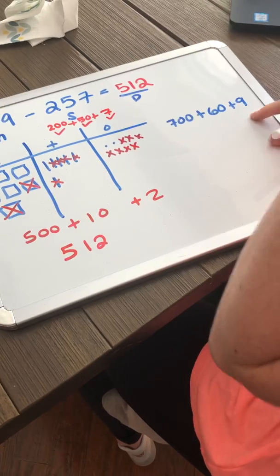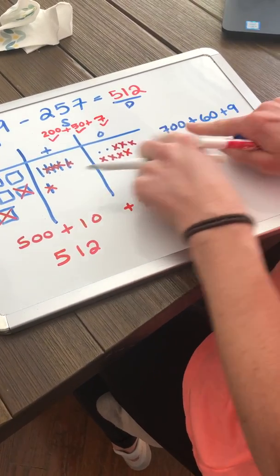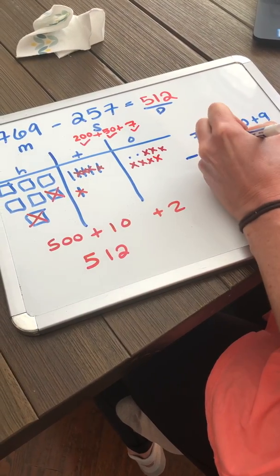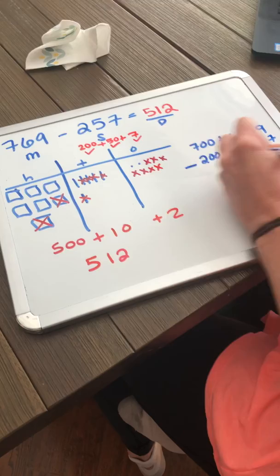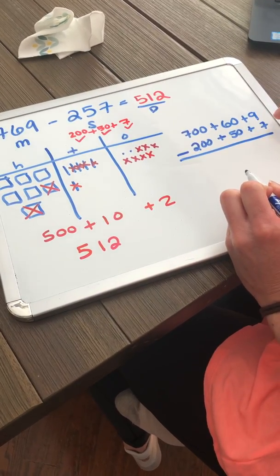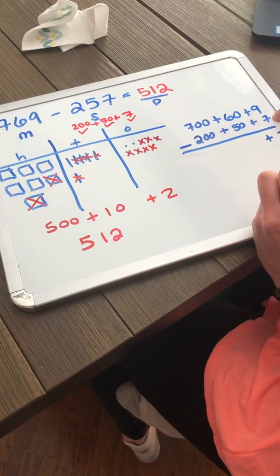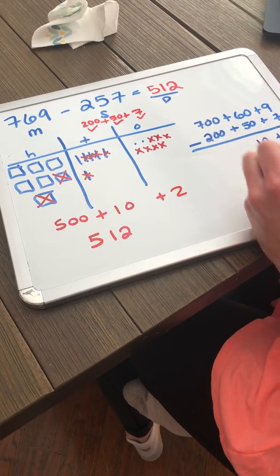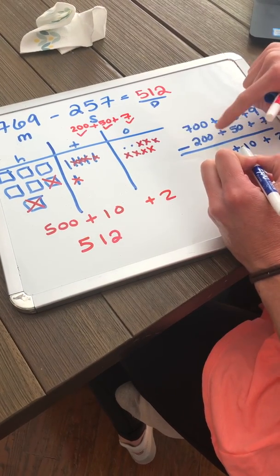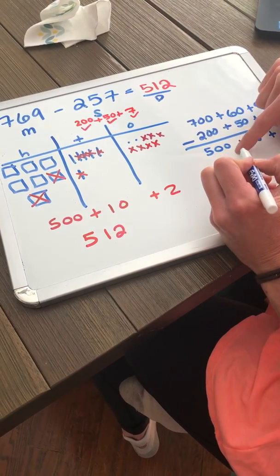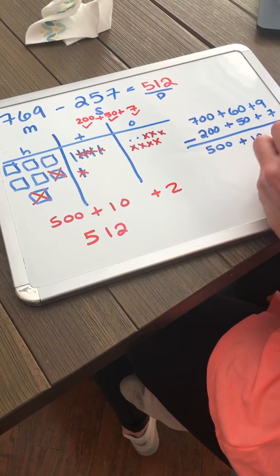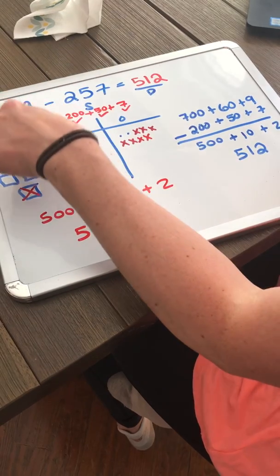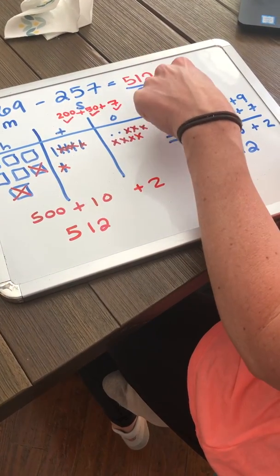Let's do this with expanded form. So we already expanded out 769. Now let's expand out 257, and we're going to subtract. 9 minus 7 is 2. 60 minus 50 is 10 because 10 plus 50 is 60. 700 minus 200 is 500 because 500 plus 200 is 700. So I get 512 as my difference. The difference between 769 and 257 is 512.